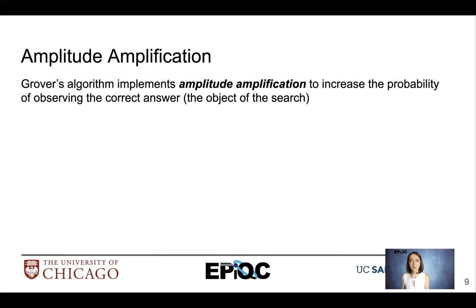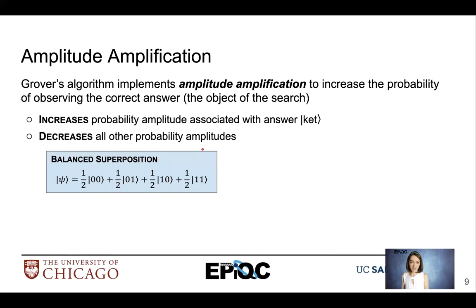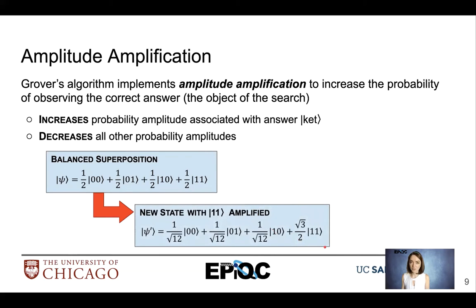Amplitude amplification allows us to increase the probability of observing the correct answer — the object of search. We want to increase the probability amplitude associated with the answer ket while simultaneously decreasing all other probability amplitudes. So if we have a balanced superposition and we're looking for a particular value, we're going to boost that ket's probability amplitude while reducing all other basis ket probability amplitudes. All these probabilities will still sum to 1.